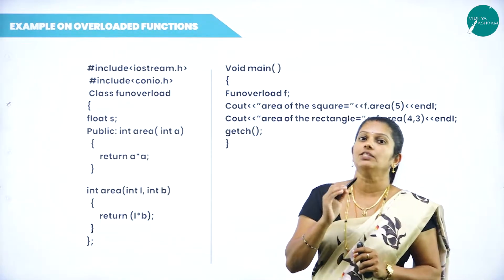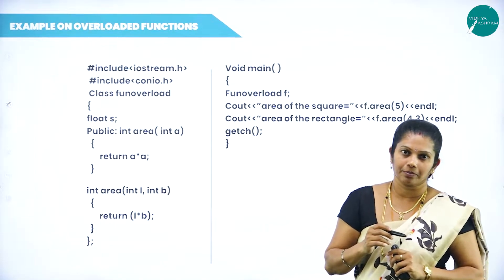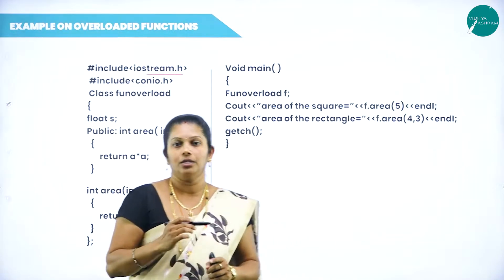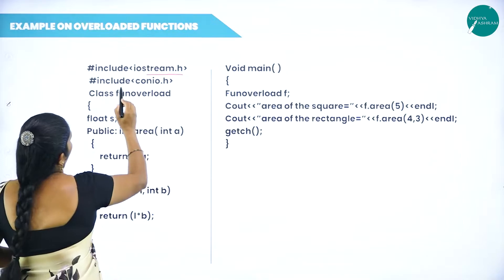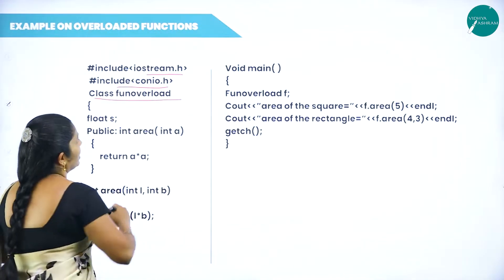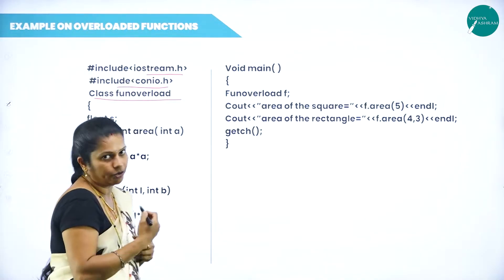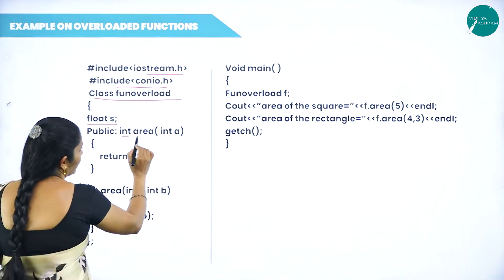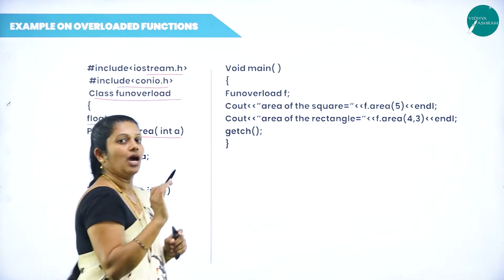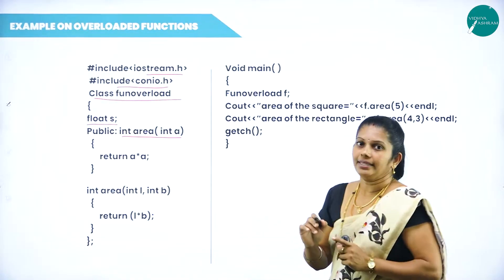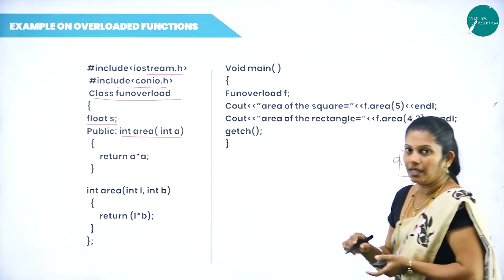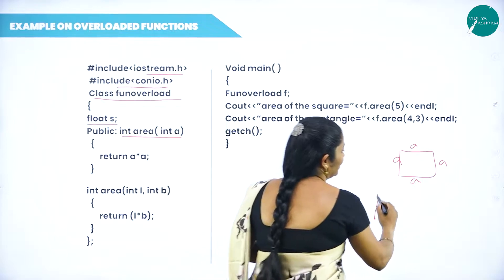Now we will write an example program. In the exam, you may get: explain function overloading with an example program. We write: #include <iostream.h>, #include <conio.h>. The class name is given as 'FunctionOverload'. We declare a function: int area(int a) — here we want to find the area of a square and the area of a rectangle. In a square, all sides are equal, so we need only one value.